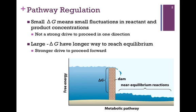Some of those reactions will be near equilibrium — that is, there is a small change in delta g. This means only small fluctuations in regard to reactant and product concentrations. It might be favorable or unfavorable, positive or negative, but delta g is close to zero, so there is not a strong drive to proceed in one direction or another.